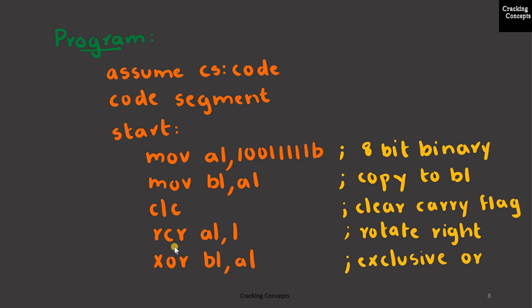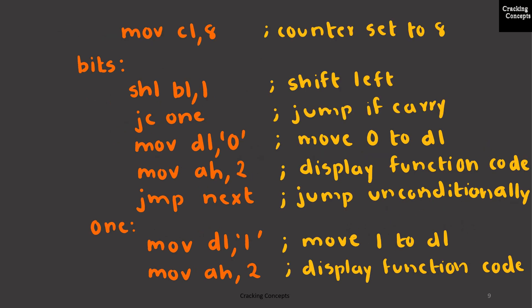Then I will perform rotate right through the carry flag on AL by 1 bit. Now this result and the value of BL will be XORed, which will give the final Gray code. Now I will load the value 8 to the loop counter, which is CL, because the number of digits is 8.